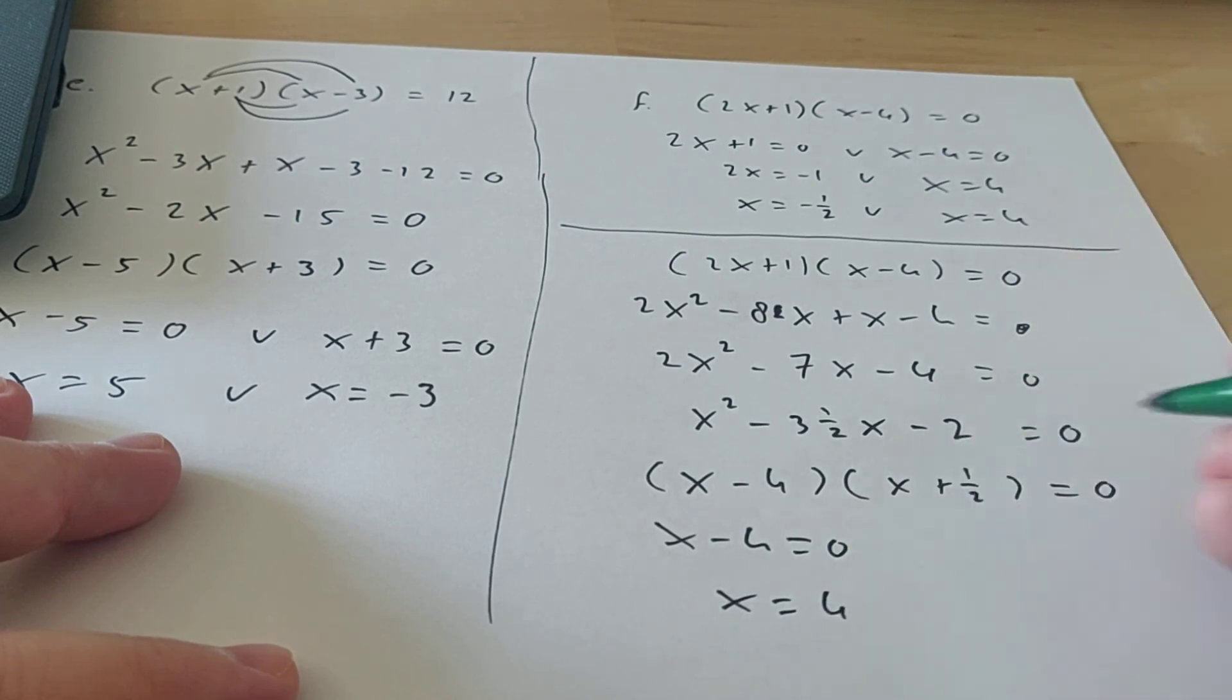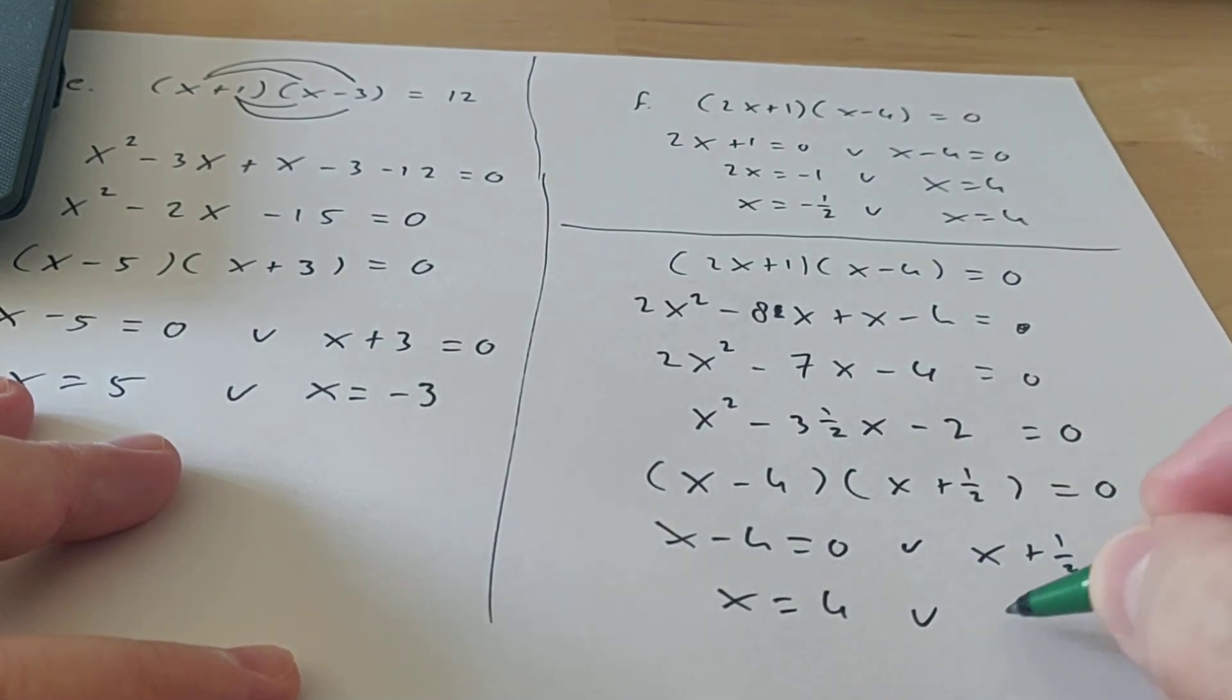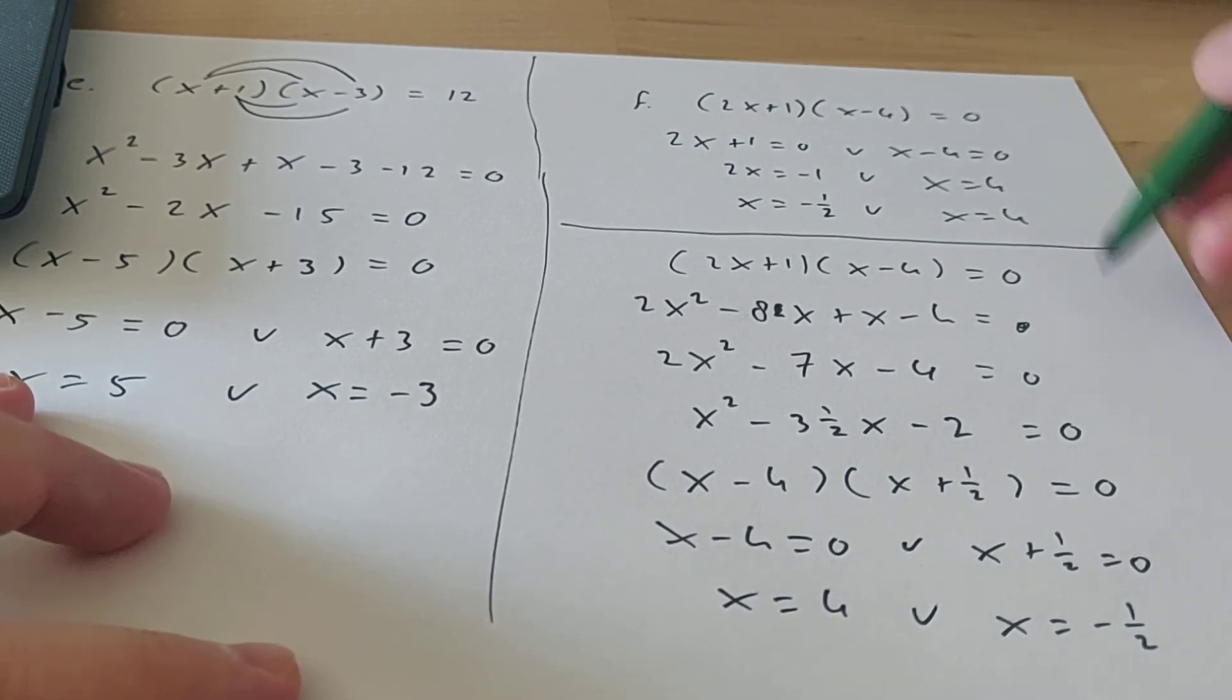So then x minus 4 equals 0. So x is going to be 4. Or x plus a half is 0. So x is minus a half. So we get the same answers. So you see we did it correct.